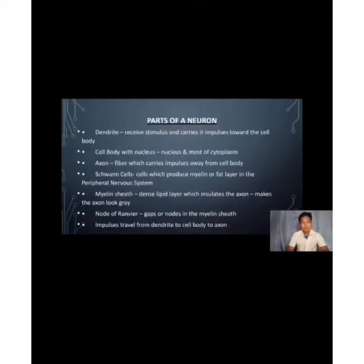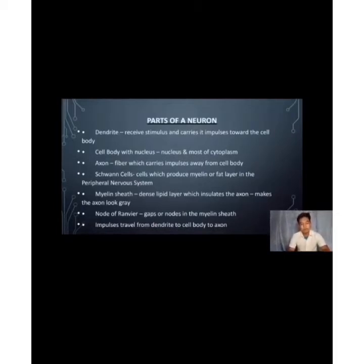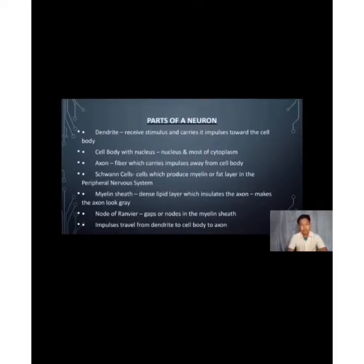What are the parts of a neuron? First is the dendrite, which receives stimuli and carries impulses toward the cell body. The cell body contains the nucleus and most of the cytoplasm. The axon is a fiber that carries impulses away from the cell body. Schwann cells produce myelin — a fat layer in the peripheral nervous system. The myelin sheath is a dense lipid layer that insulates the axon. The Node of Ranvier is a gap in the myelin sheath. Impulses travel from the dendrite to the cell body to the axon.